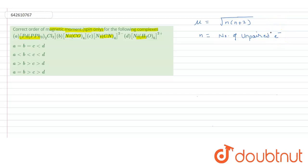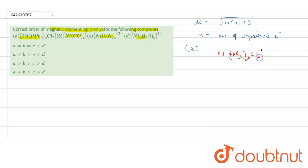Complex A is [Pd(PPh₃)₂Cl₂], a complex of palladium with two PPh₃ ligands and two chlorine ligands, giving four ligands total. This complex is a square planar complex, because as we move down the group the effective nuclear charge increases.